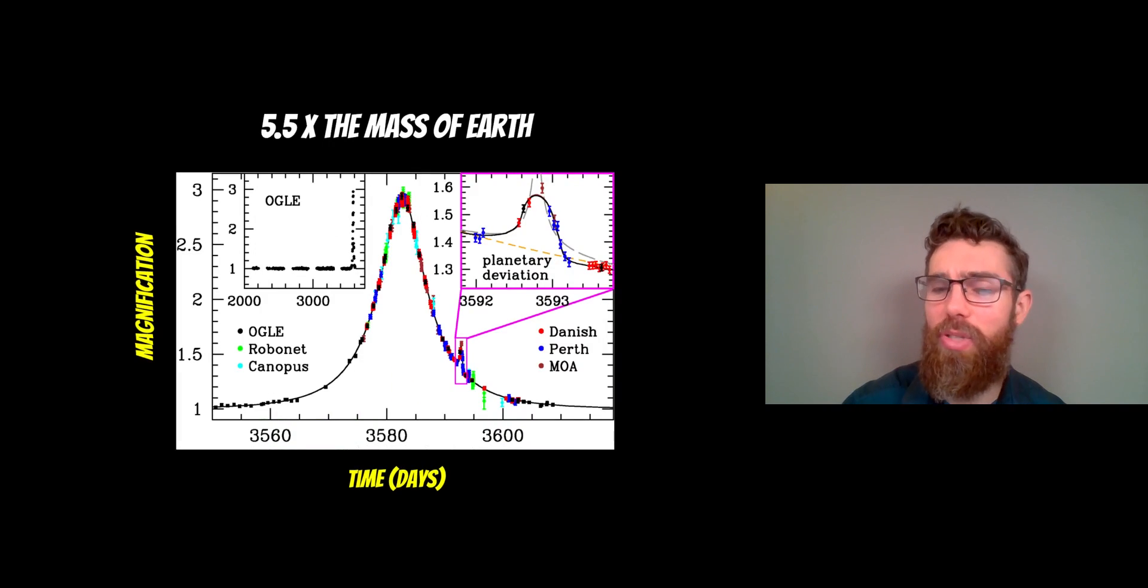Some examples then of how this can be used to detect planets. This one here is a planet that's about five times the mass of Earth. The zoomed in section to the right is due to the planet. You've got a planetary deviation there from the actual stellar lens or the star lens that's passed in front of that background star. From the amount that it's actually caused a change in the brightness, you can work out the mass of that planet.